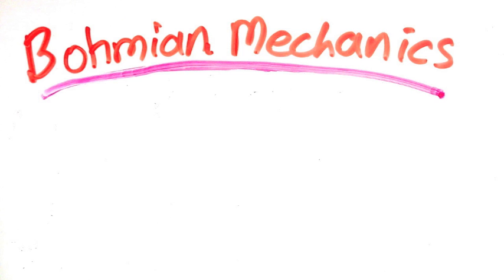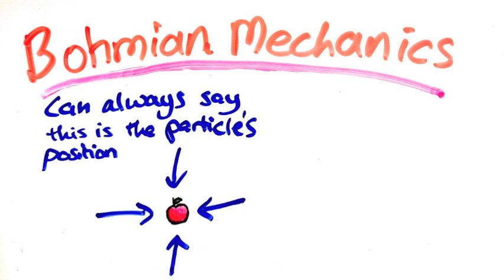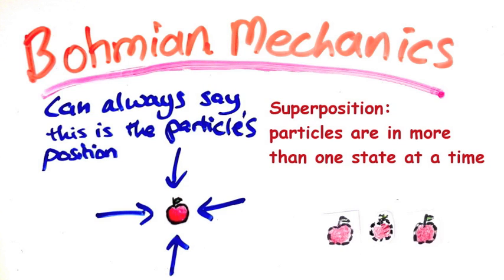Last time we talked about Bohmian mechanics, a possible alternative to quantum mechanics. One of the appeals of Bohmian mechanics is that we can always say this is the position of our particle. On the other hand, with quantum mechanics, the superposition principle forces us to say the particle is in many different states at the same time.